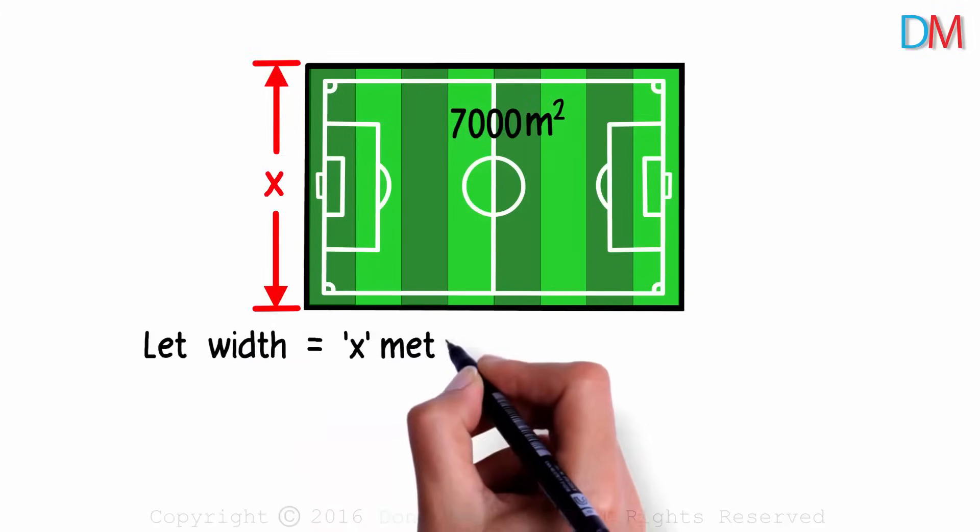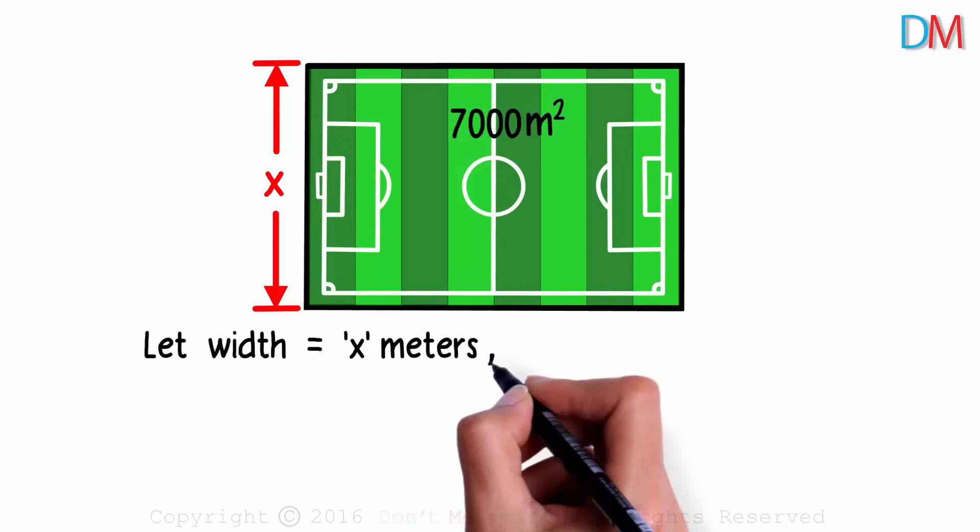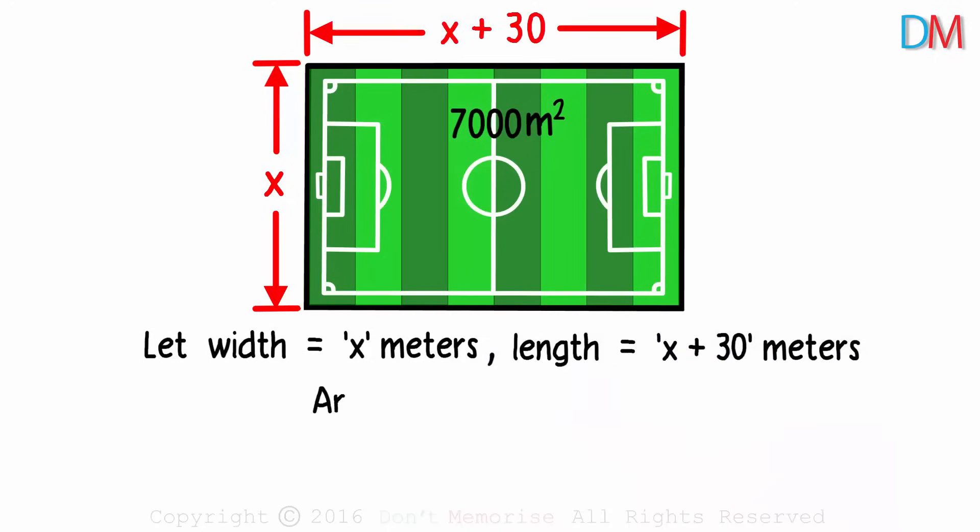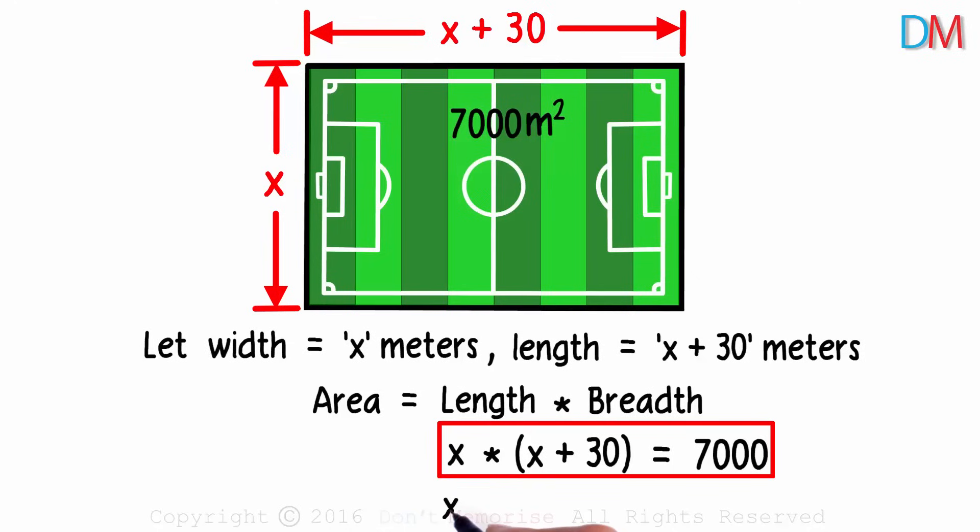If its width is x meters, then based on the condition given, its length will be x plus 30 meters. The area of a rectangle is nothing but the product of its length and breadth. Hence, x times x plus 30 will equal 7000. Rewriting this will give us the quadratic equation as x squared plus 30x minus 7000 equals zero.